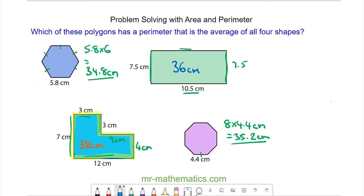To work out the average of all 4 perimeters, we are going to add them together and divide by 4. And 144 divided by 4 is equal to 36. So it is the rectangle that has the average perimeter.